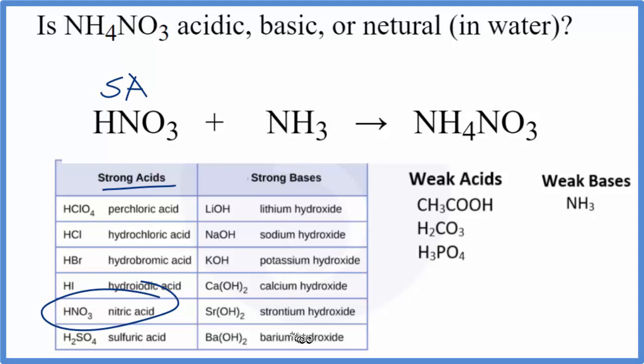NH3, not on our list here, but it is over here, is a weak base. WB. And now we know the strength of the acid and the base that produced the NH4NO3 salt.